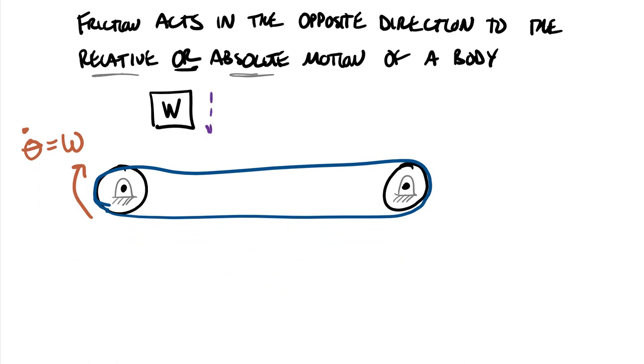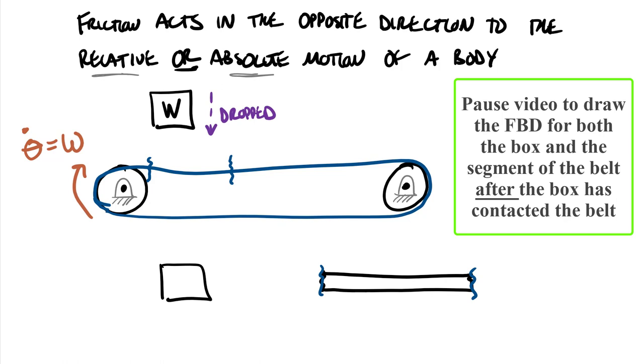What I'd like you to do is create a free body diagram of the box including friction and also the portion of the belt that it collides with. This box is being dropped onto the belt. So we're going to create two different free body diagrams. One body would be the box, one body would be a section of that belt. I've just basically cut out a section of that belt.